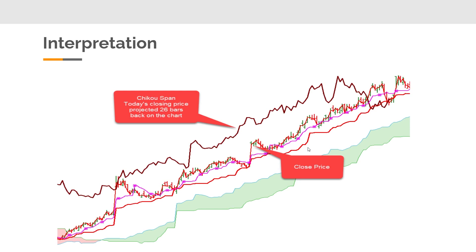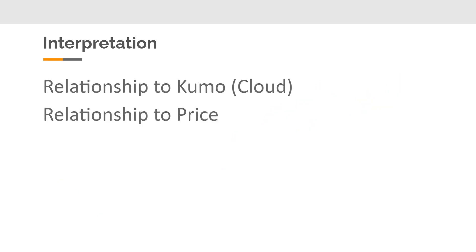The last indicator is the Chikou Span — a really simple indicator. If you take today's close and shift it back 26 days on the chart, you have the Chikou Span. It's just a close price plotted 26 bars ago. You can read it in its relationship to the Kumo, similar to how we look at price — if it's above the Kumo, that's a bullish indication. It also gives you an indication of price stability and trend strength. If there's a big separation between the Chikou Span and the current price, the trend right now is strong.